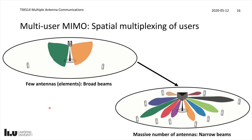When it comes to multi-user MIMO or massive MIMO, the main benefit is spatial multiplexing of different users. Traditionally you might have a base station with two or three sectors with fixed beams pointing toward the coverage area — broad beams that cover the entire area without knowing where the user is. In that case, you can only serve a limited number of users at the same time from each sector.